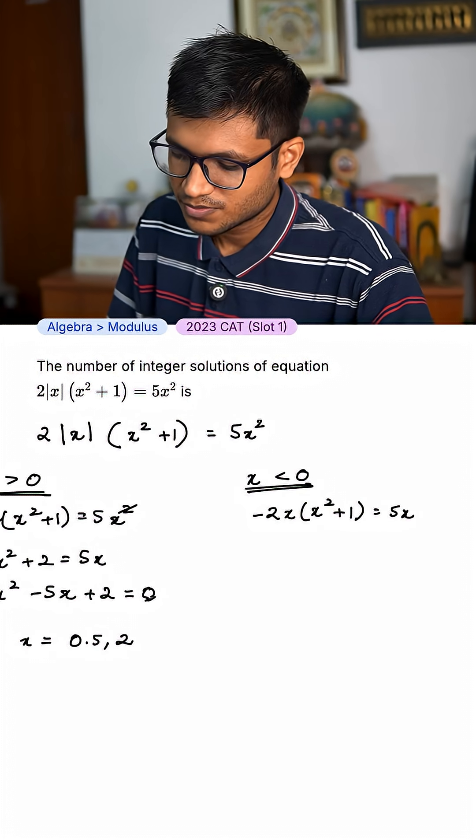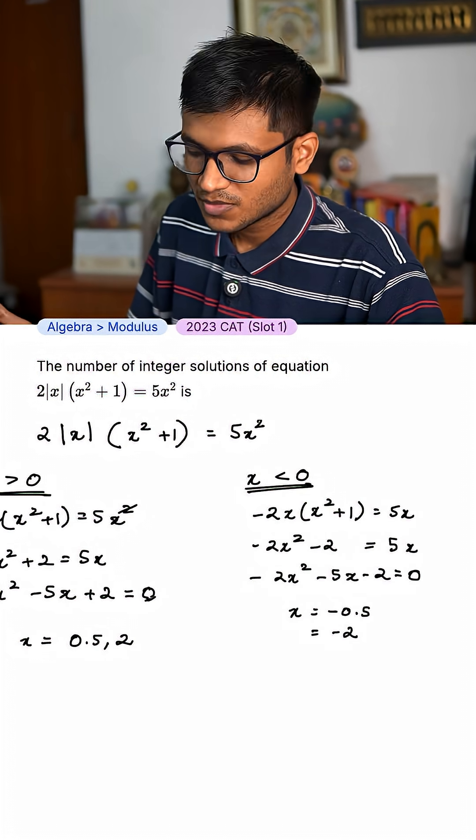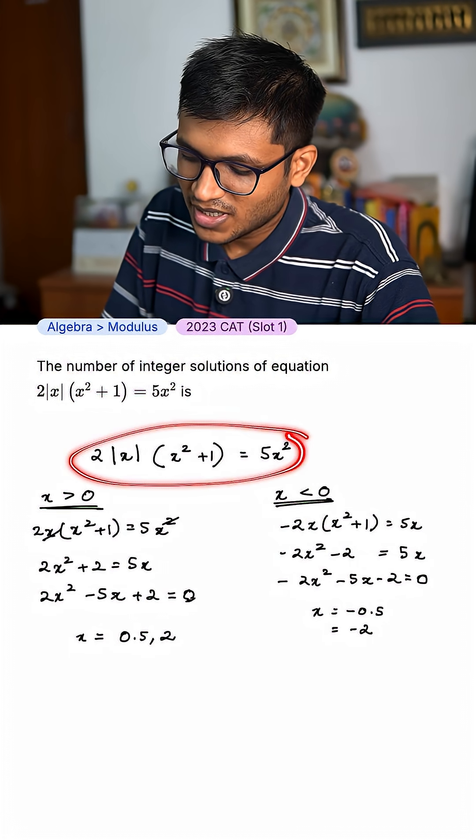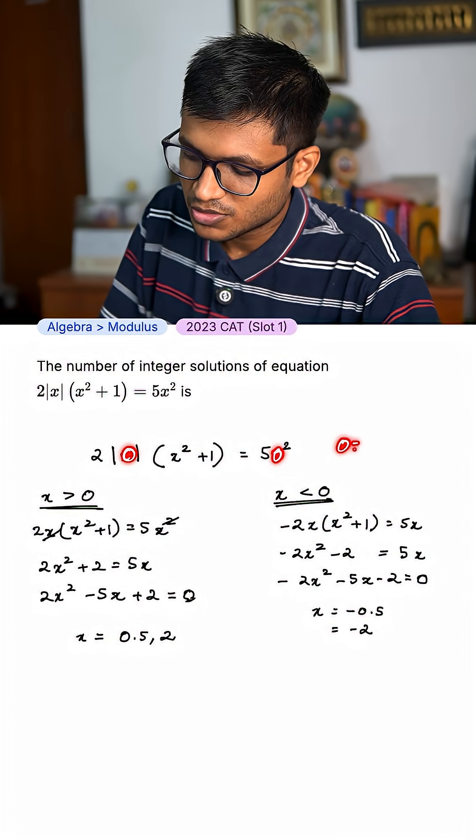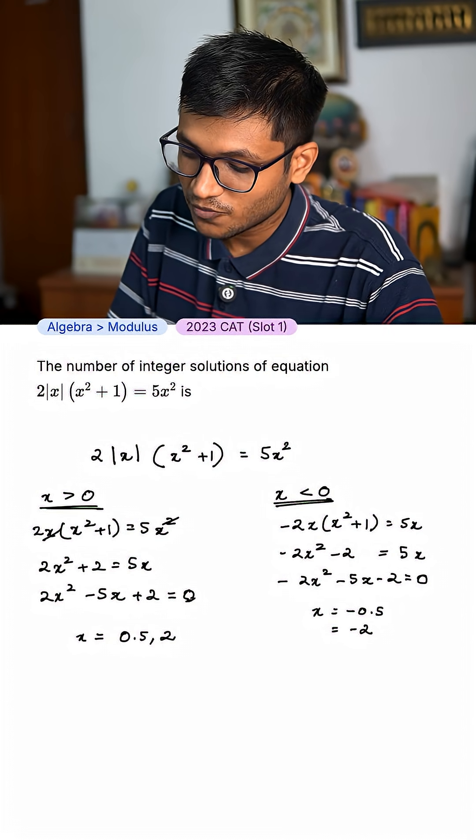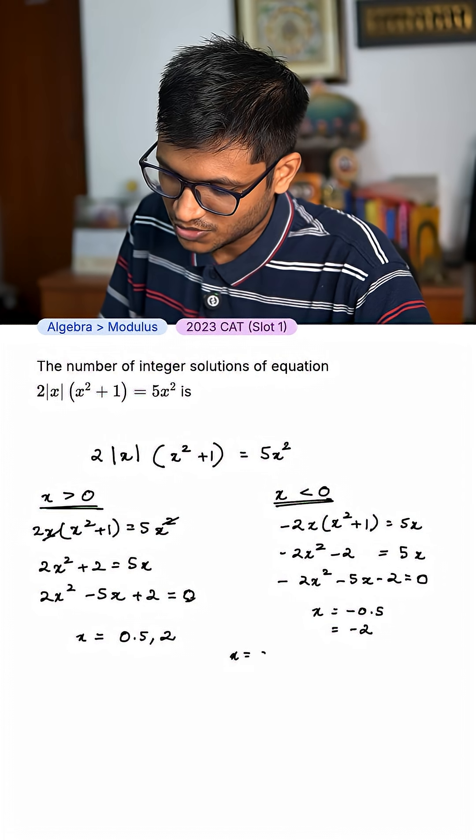Similarly, take x less than 0, and now you get two more values. If you look at this and put x equal to 0, you're going to get both sides as 0 equal to 0. So, 0 can also be an answer. Always test for that once. So, x can be equal to 0.